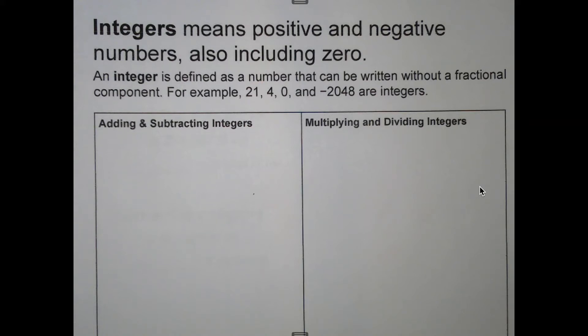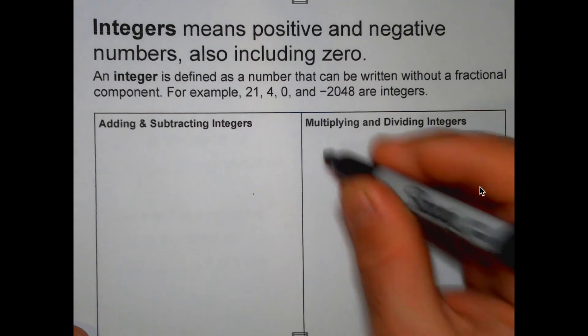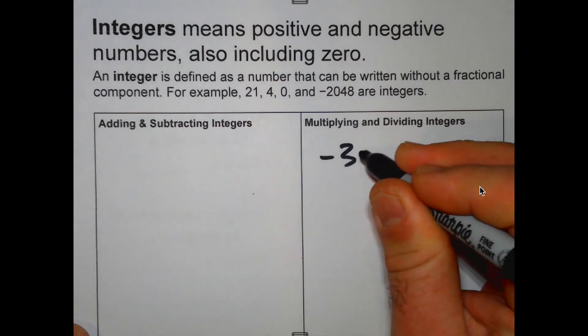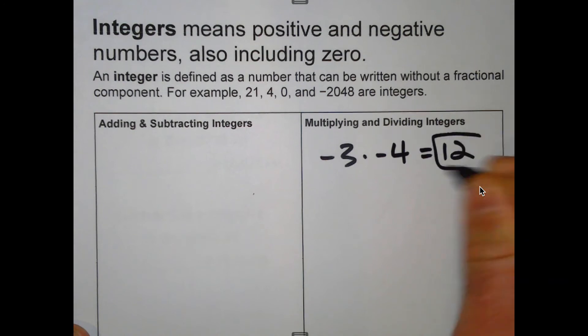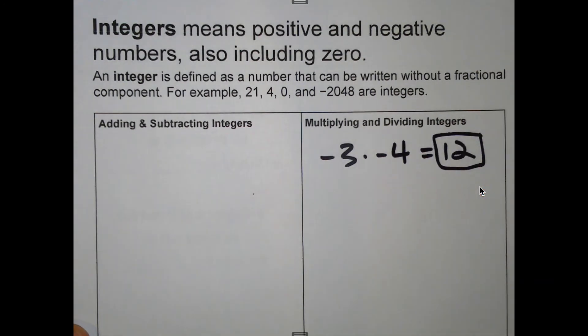So there's rules for positive and negative numbers. A lot of people hear a negative times a negative is a positive. And that's true for multiplication and division. But when you're dealing with adding and subtracting, it's a different story.